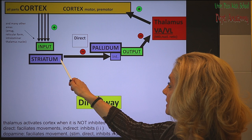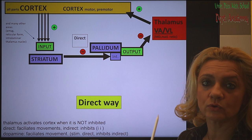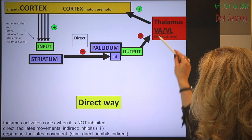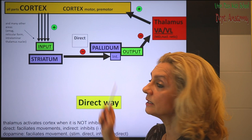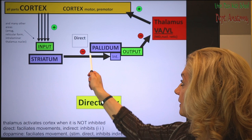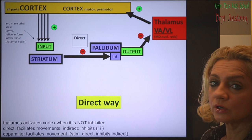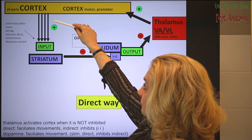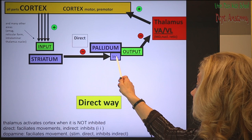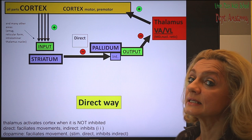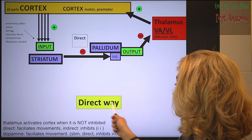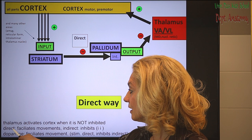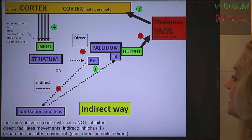Let's start with the direct pathway. The input and output parts are in direct connection with each other. The thalamus activates the cortex when it is not inhibited. Stimulatory pathways work with glutamate and inhibitory pathways with GABA. Through the direct pathway, the striatum is stimulated, then it inhibits the pallidum — so the inhibition is inhibited, meaning the output of the direct pathway is stimulation. The direct pathway facilitates movements.